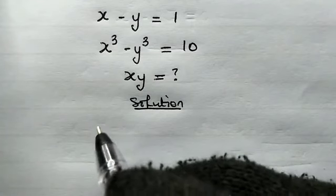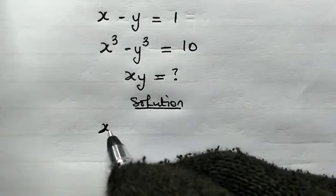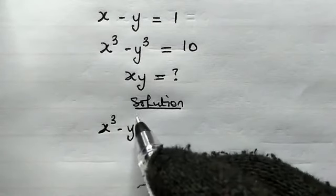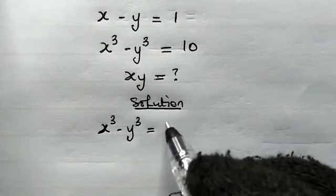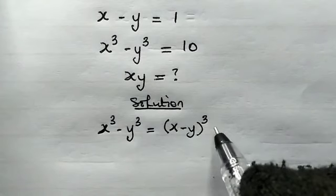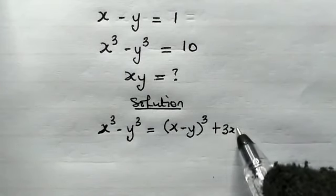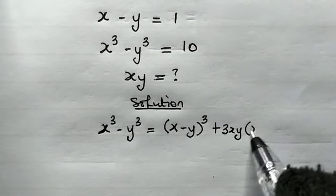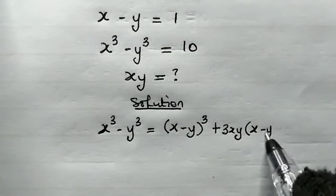So this identity is x cubed minus y cubed equals x minus y cubed plus 3 times x times y into bracket x minus y.